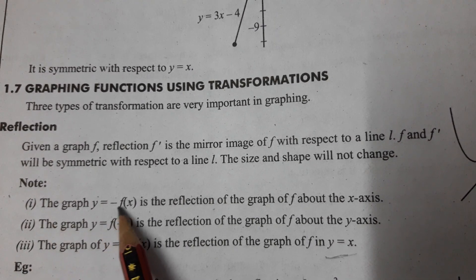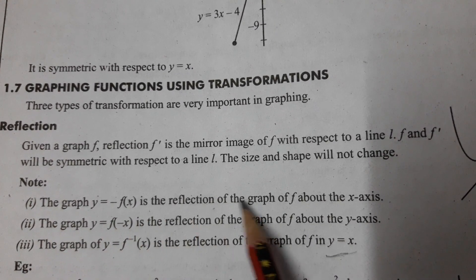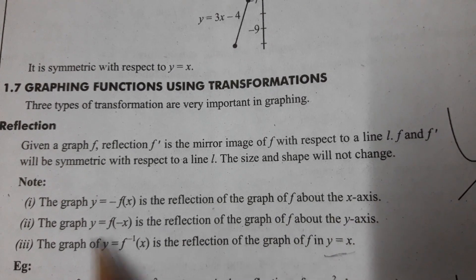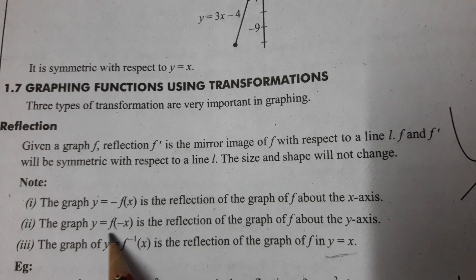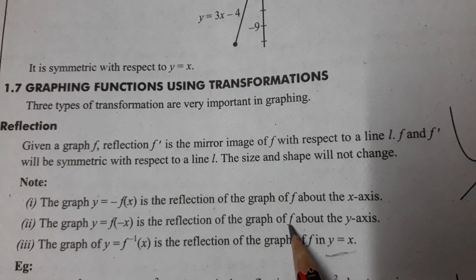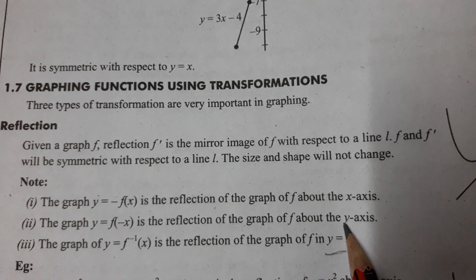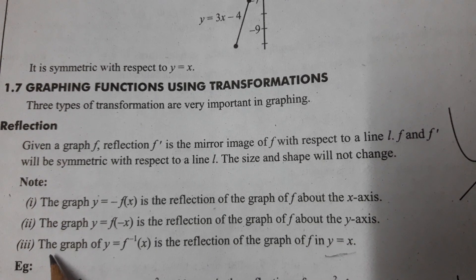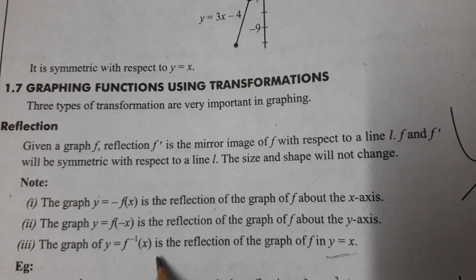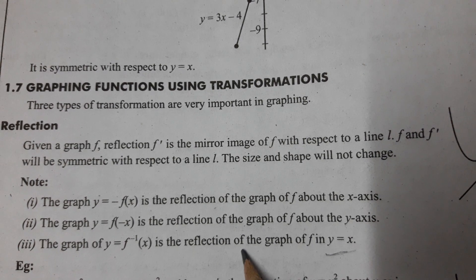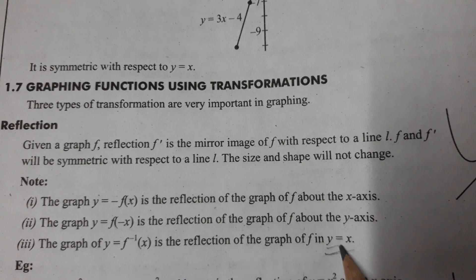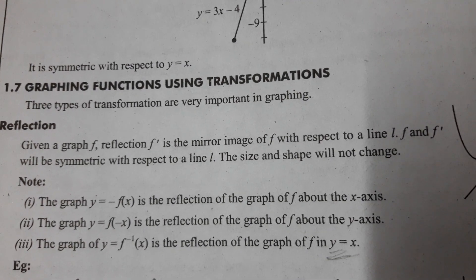Note: the graph y = −f(x) is the reflection of the graph of f about the x-axis. The graph y = f(−x) is the reflection of the graph of f about the y-axis. The third important one: the graph of y = f⁻¹(x) is the reflection of the graph of y = f(x) about the line y = x.